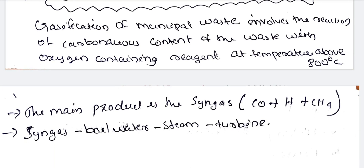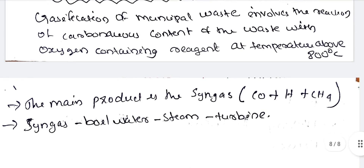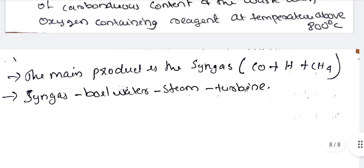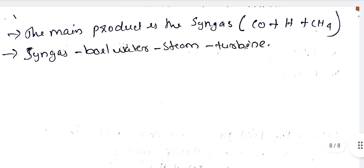Syngas is a mixture of carbon monoxide, hydrogen and methane. Syngas is used to generate steam in air turbines for electricity production.